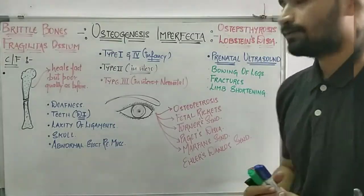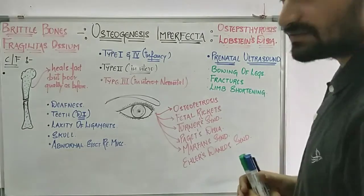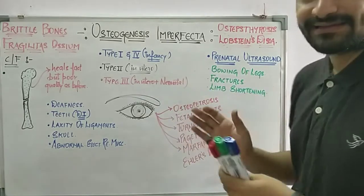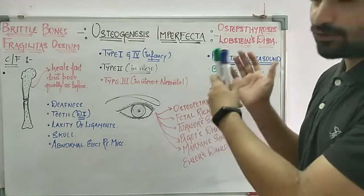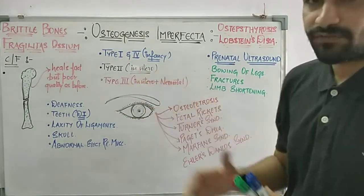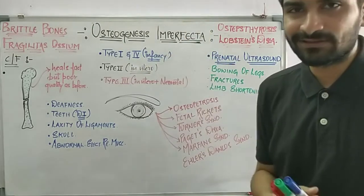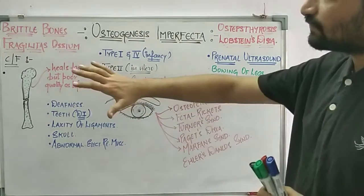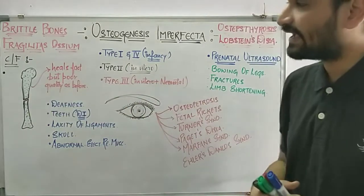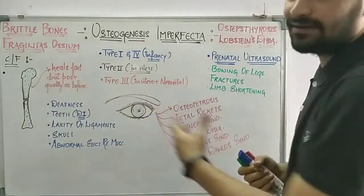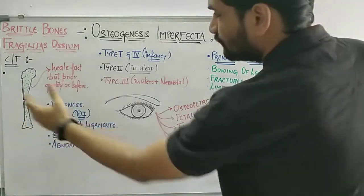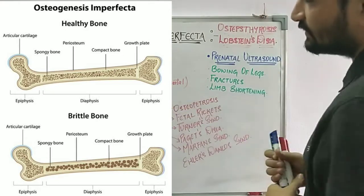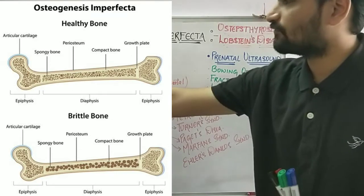Before dividing clinical features by the Silence et al. classification, here is an overview of the most common clinical features. Firstly, there will be fragility as well as porosity in the bone. The quality of the bone will be such that it can break easily and will be porous in structure, leading to fractures.